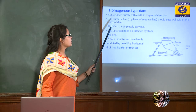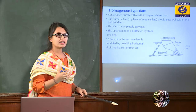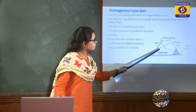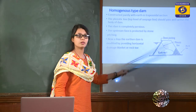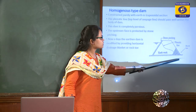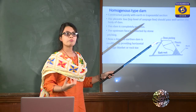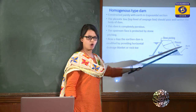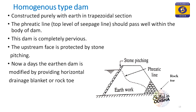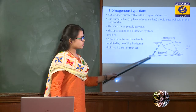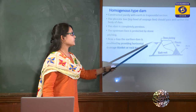In a homogeneous dam, the phreatic line — which is the top level of the seepage line — should pass well within the body of the dam. Since the body is pervious, seepage occurs. If the phreatic line passes outside the dam body, soil particles can be eroded along with the water. To prevent this, internal drainage is provided in the form of rock toe or horizontal drainage filters, so water seeps out but soil particles remain. Stone pitching is also provided on the upstream face to prevent erosion due to wave action and water pressure.